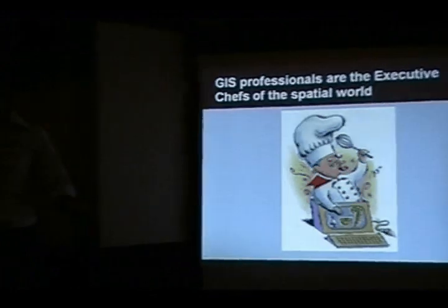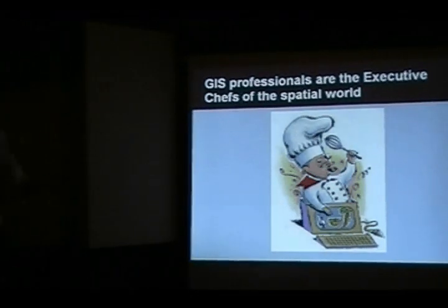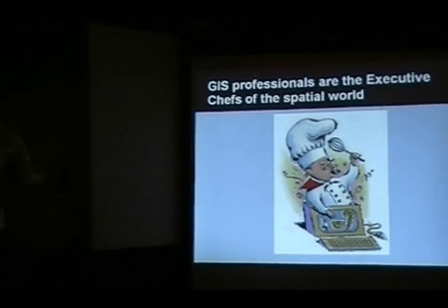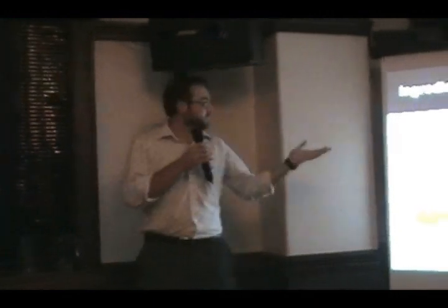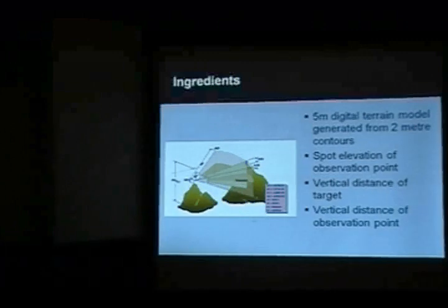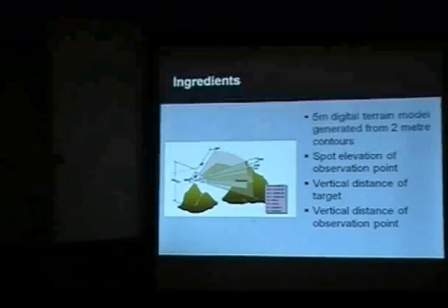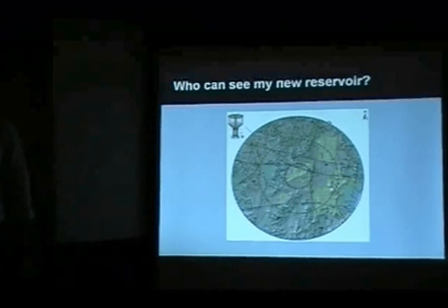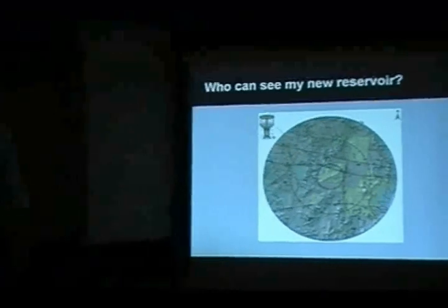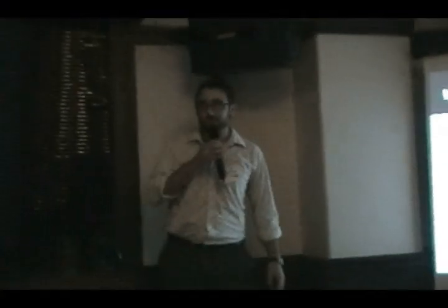As GIS professionals, we are the executive chefs of the spatial world. We do all the fancy stuff at the top end — we have all the ingredients, we put everything together, and we produce things that people really don't understand. When you're eating a good meal, do you really care about exactly what ingredients have gone into it, or the techniques the chef used? Or are you interested in the final product? For a viewshed, for example, we use terrain models, observation points, vertical distance, trigonometry — but clients really just want to know: can I see my new reservoir from where I'm standing? They don't care about the stuff that goes into producing that viewshed.